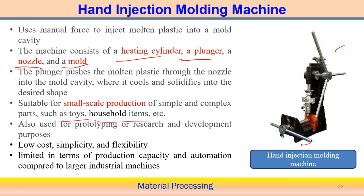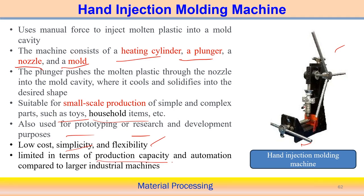Hand injection molding machines can also be used for prototyping or R&D component development. The cost is very low, and there is flexibility depending upon changing the die system as required. However, production capacity is limited because it is a completely manual machine, and it is limited in terms of automation compared to industrial machines.